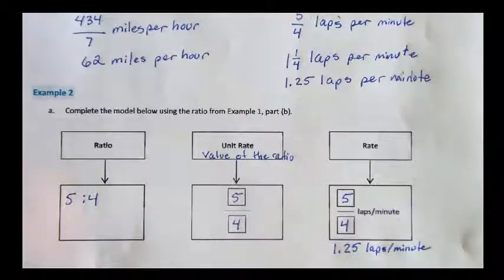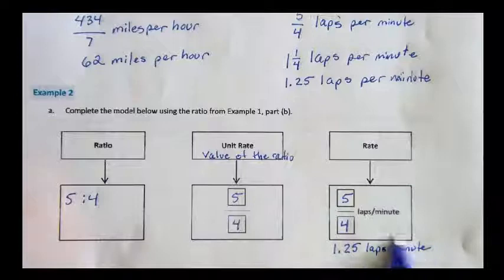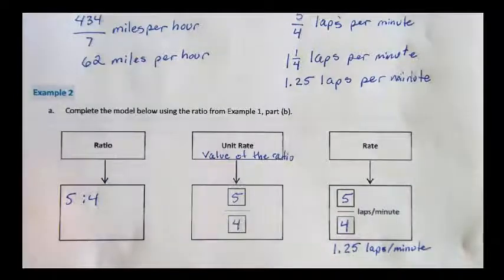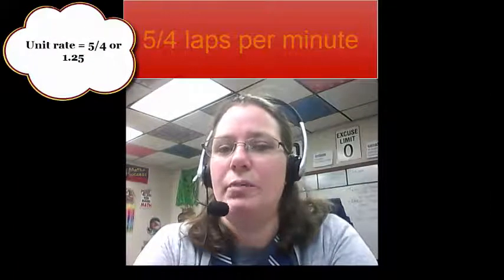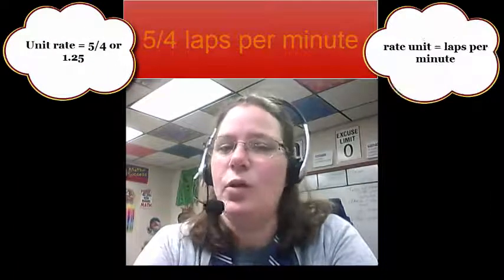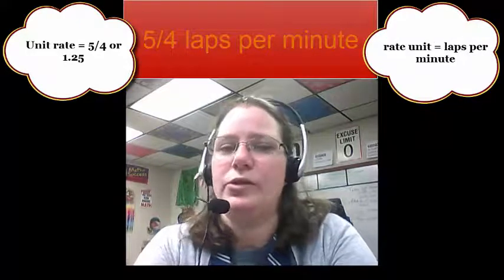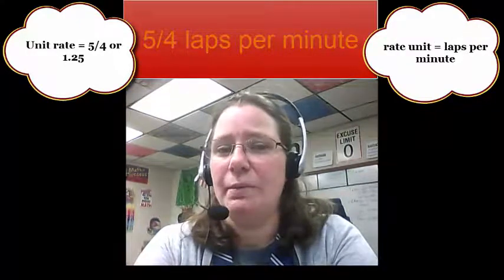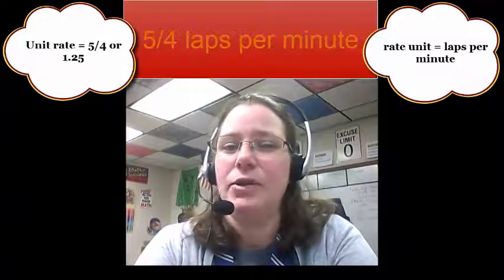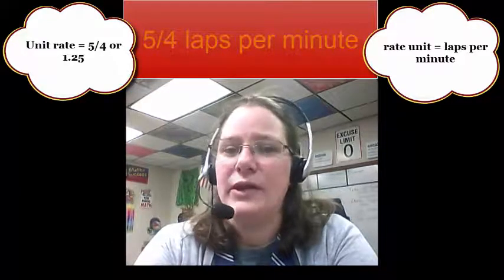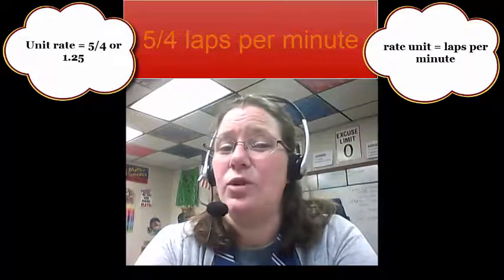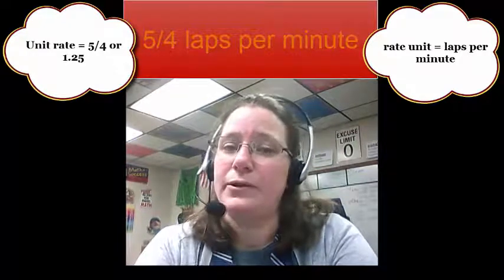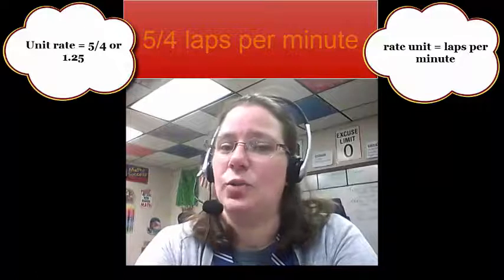It's very important that when we're talking about the rate, we have our units in there. Well, there we have our lesson on how to write a rate. When you write a rate, you really get two parts: you get the unit rate, which is the number, like 5 fourths, and you get the rate units, that's the words, like laps per minute. It's important that when you write a rate, you have both parts, and you should be able to tell which is which.